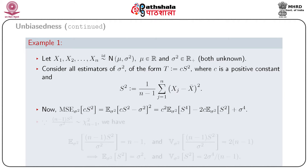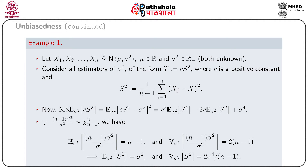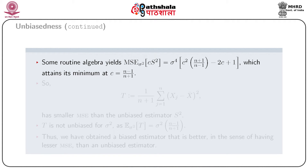Now, MSE(cS²) = E[(cS² − σ²)²] = c² · E[S⁴] − 2c · σ² · E[S²] + σ⁴. Since (n−1)S²/σ² follows a chi-square distribution with n−1 degrees of freedom, it follows that E[S²] = σ² and E[S⁴] = ((n+1)/(n−1)) · σ⁴. Thus MSE(cS²) = σ⁴ · [c²(n+1)/(n−1) − 2c + 1]. Let us write this function as h(c).